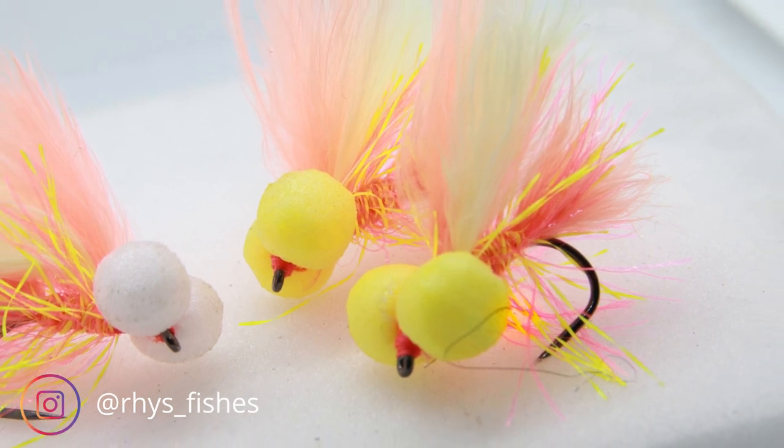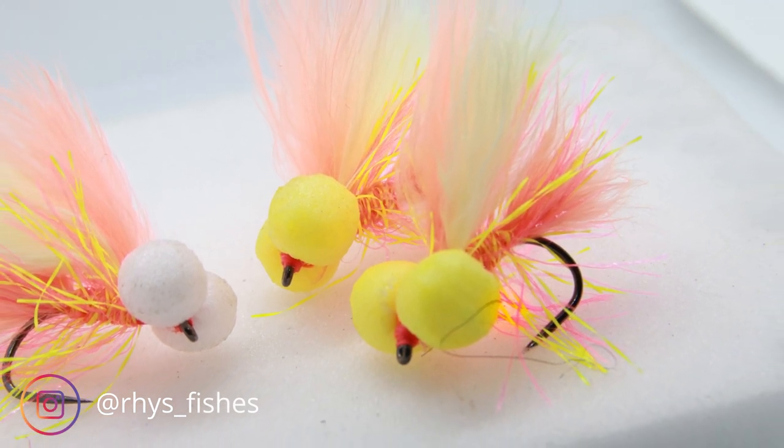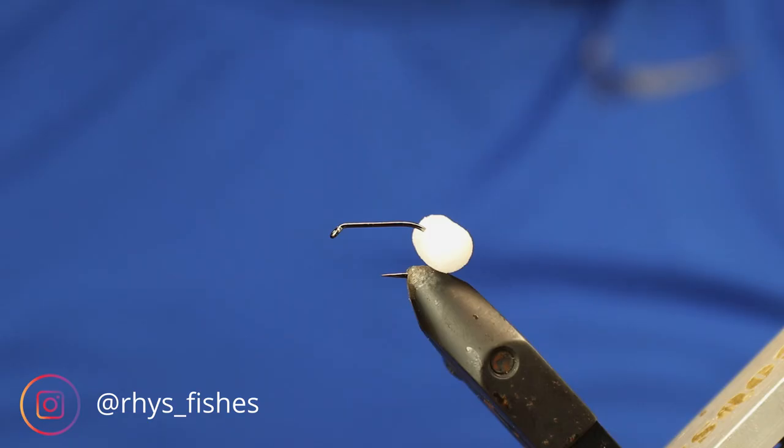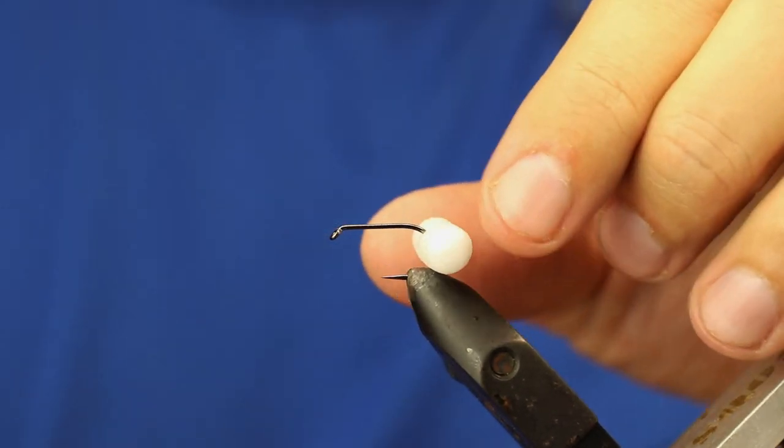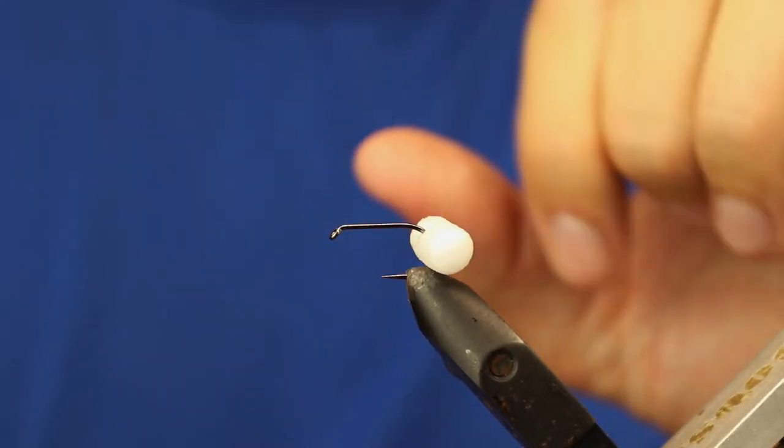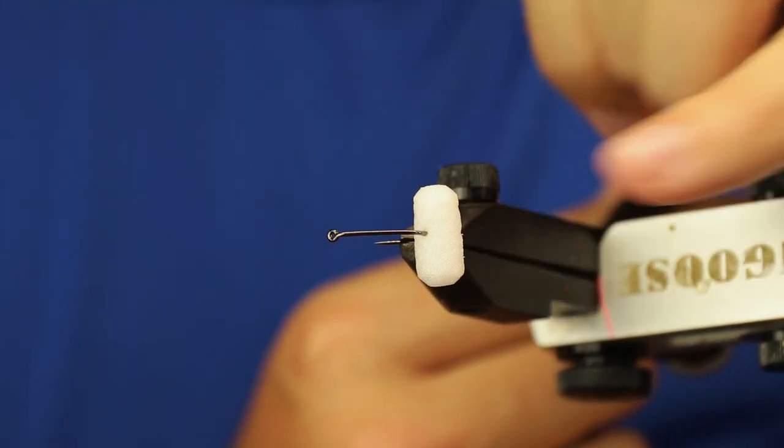What's up guys, welcome back to another video. In this episode I'm going to be tying a St Clements booby. To start with I'm using a short shank black nickel size 6 fulling mill hook, barbless. I've taken a three inch piece of foam, cut it into this shape, put it in the oven for a minute, and then slid it midway through the hook.